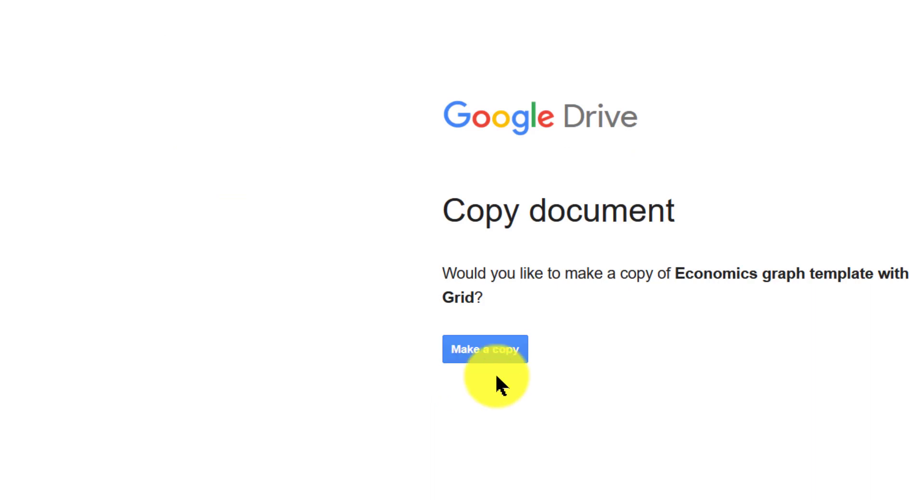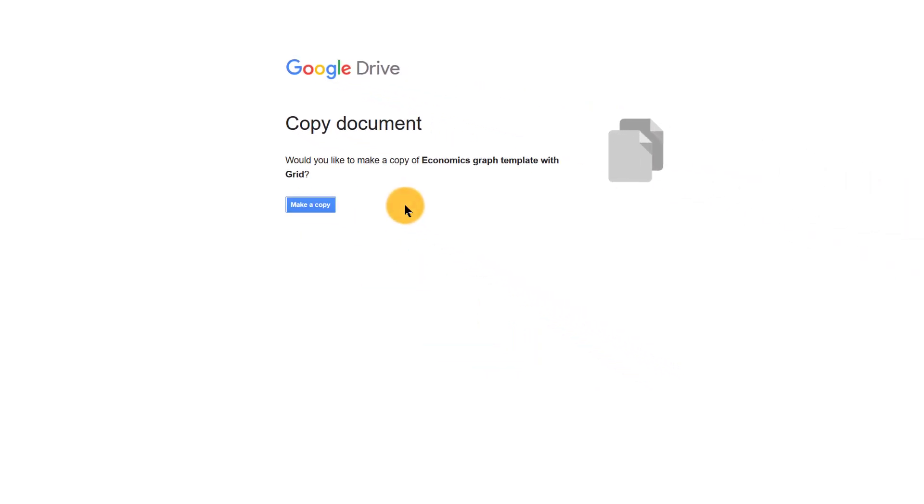So when you click the link, it's going to ask if you want to make a copy. So you're not going to be able to edit the original version. You're going to want to make a copy that you save in your Google account. When you click, it might ask you to log into your Google account. Let's just make a copy here. And it'll take a couple of seconds usually to make a copy in your own account.